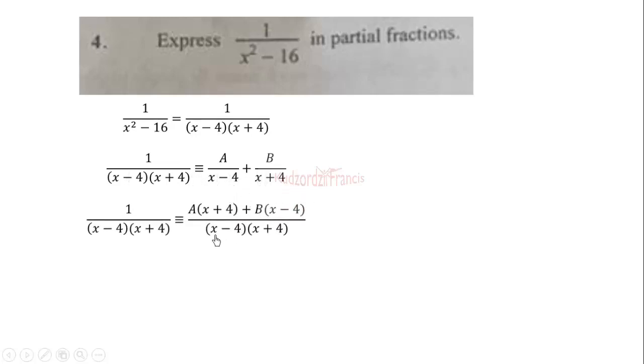So when you find the LCM, we have (x minus 4)(x plus 4). Then this comes here, we are left with A times (x plus 4). This one also comes here, we are left with (x minus 4) times B.